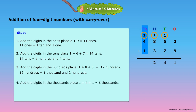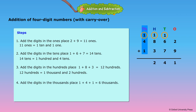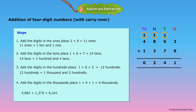Step 4: Add the digits in the 1000's place. 1 plus 4 plus 1 is equal to 6 thousands. Put 6 under the 1000's column. Therefore, 4,862 plus 1,379 is equal to 6,241.